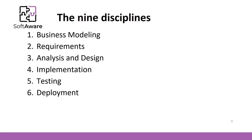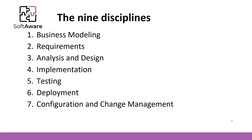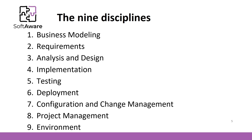The last three are the support disciplines. Configuration and change management is not only for tracking versions, but for controlling changes as well. The project management discipline focuses on key aspects of an iterative development process — risk management, planning an iterative project, and monitoring its progress. The environment discipline focuses on activities required to provide a software development environment, including processes and tools.